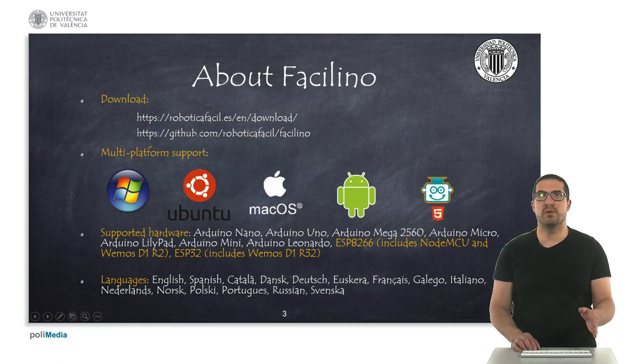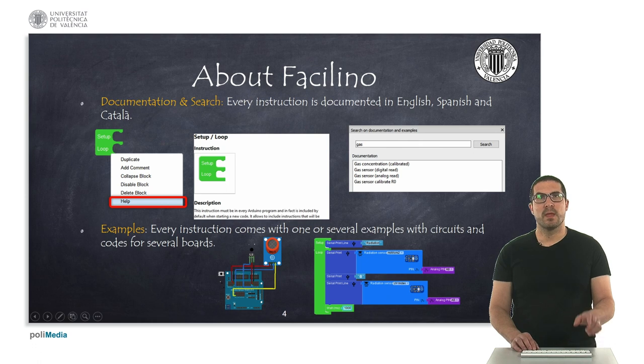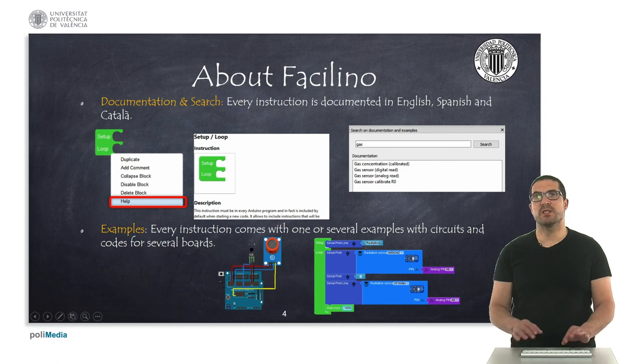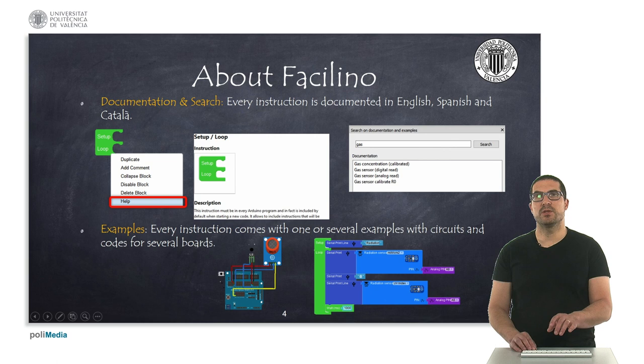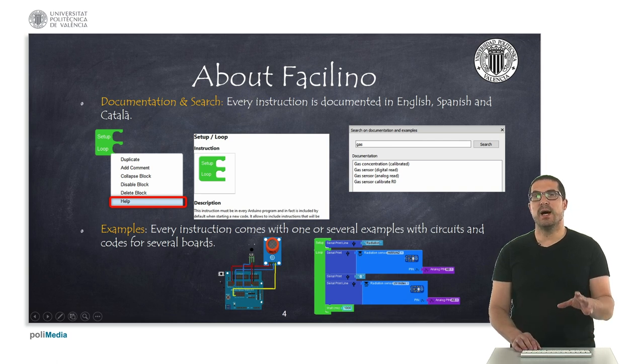It's been translated into multiple languages as you can see here, and there's a documentation and search tool. If you right-click on every instruction, there will be this menu and you can click on help and you will see the help for that instruction, which usually includes a description and detailed information about the inputs and how to use it. You can also search for specific instructions using the search utility by introducing keywords and they will list some of the found examples and instructions. Every instruction usually comes with an example or even several examples and each example has a circuit documenting how things are connected and Facilino code how to program this example.